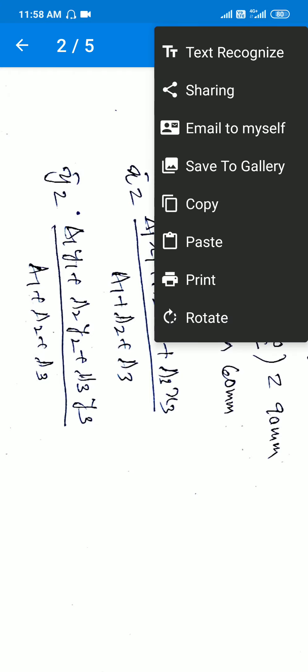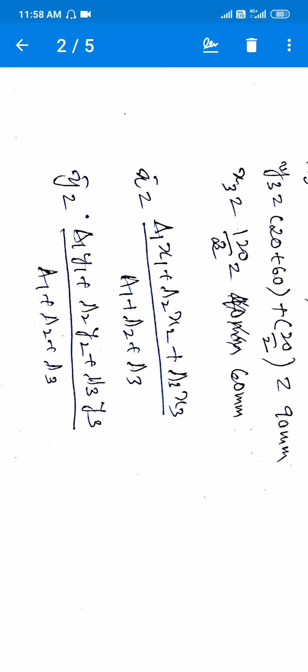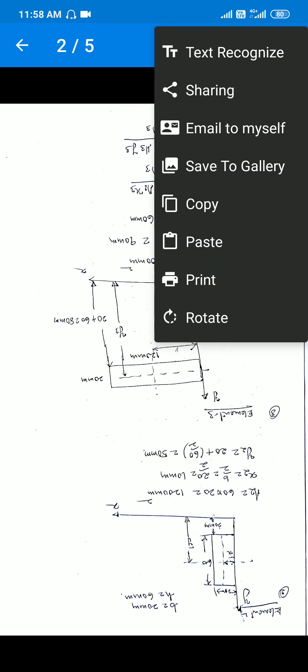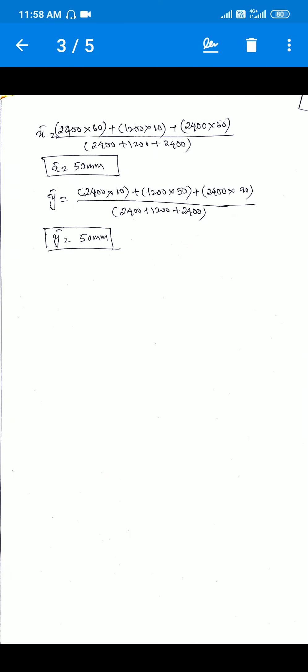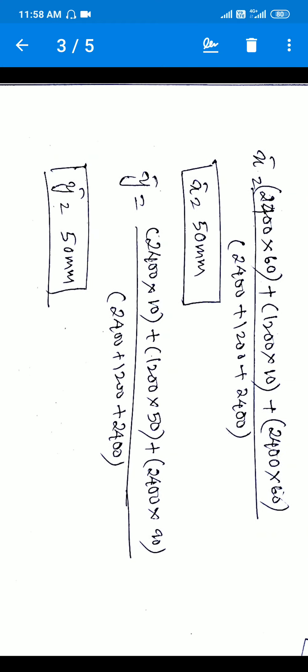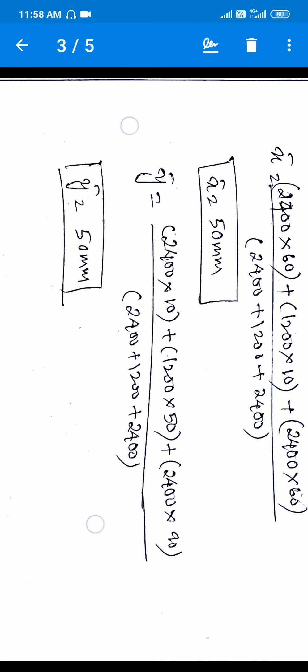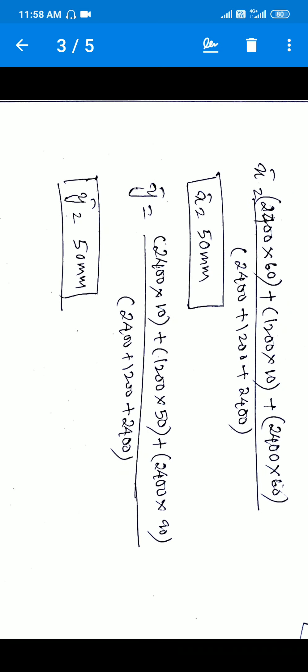Putting all the values into the equations and calculating, the final answer is: x̄ = 50 mm and ȳ = 50 mm. These are the values of x̄ and ȳ for the centroid of the given channel section.